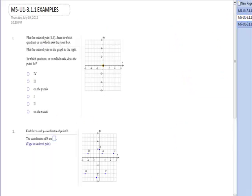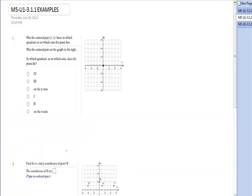Problem number 1, plot the ordered pair 1, 1. State in which quadrant or on which axis the point lies. Well, you will click that location with your mouse, and if you're supposed to go to 1, 1, that's positive 1 in the x direction, positive 1 in the y direction. So you will move it, 1, 1, and drop it right there. That is the point 1, 1.